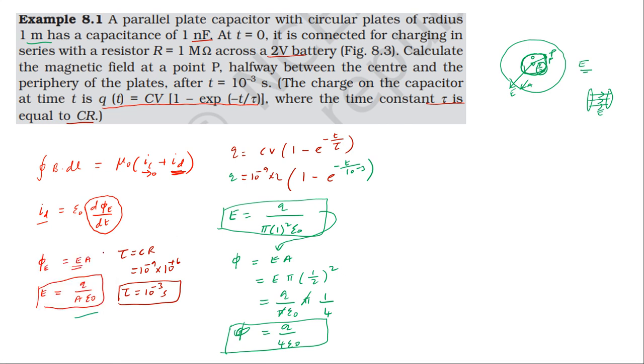The displacement current formula is: I_d equals epsilon naught into d phi by dt.